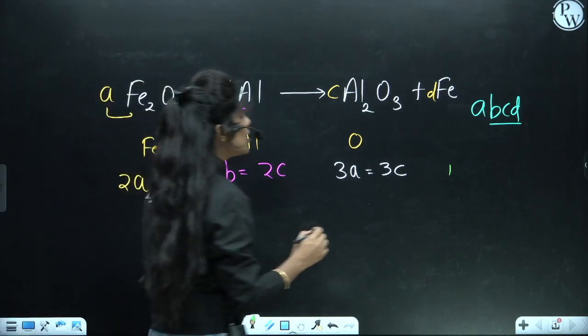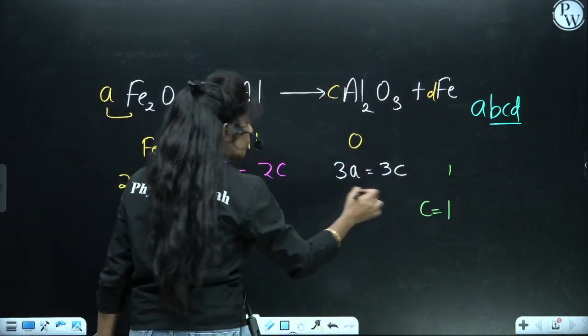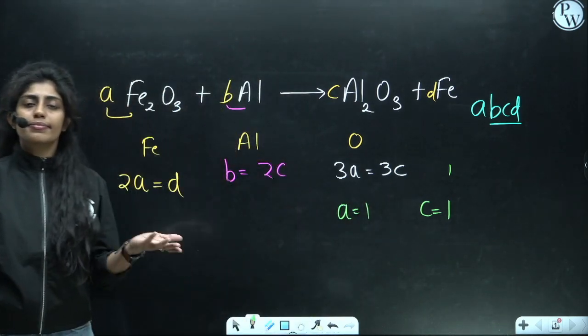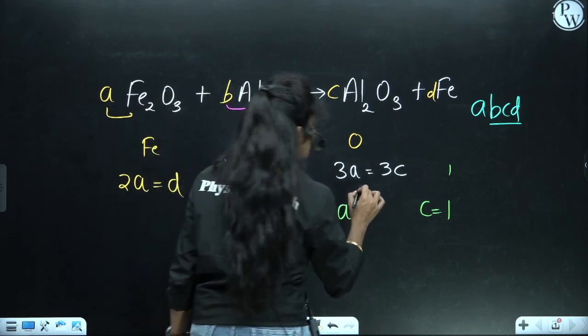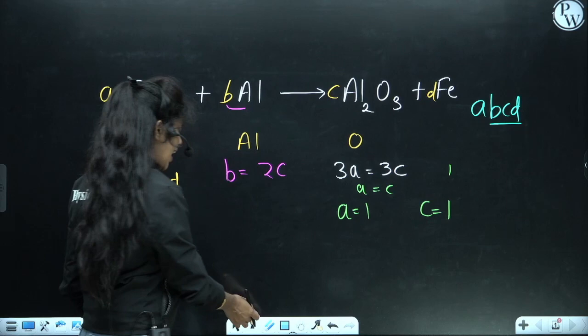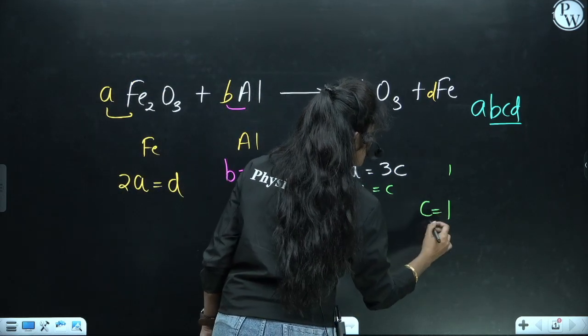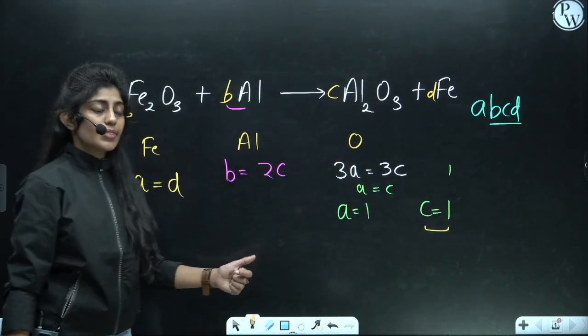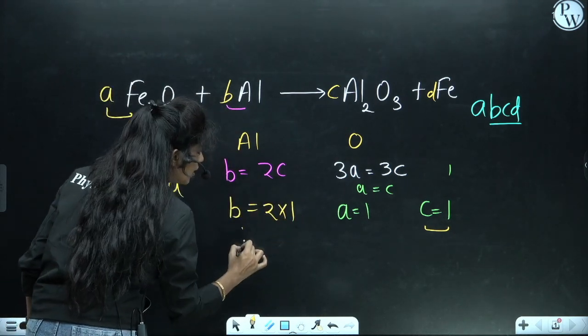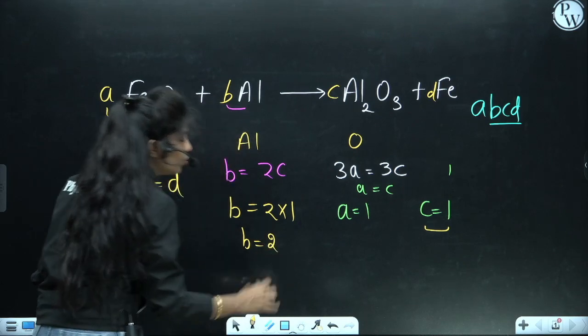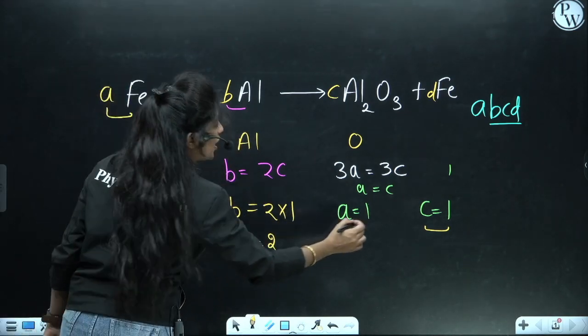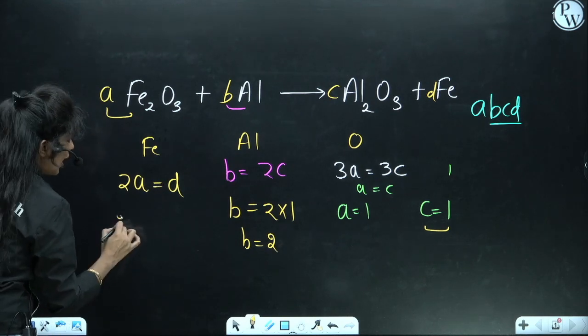So how can I do this? You have to do one thing: any of the coefficients you can consider equal to 1. So I am considering c is equal to 1, so automatically, a is also equal to 1. So if I got the value of a and c, I will be applying the value of c here and it will give me the value of b, that is equal to 2, simple. And now if I have got the value of a, I can put that value so that I will be getting the value of d.